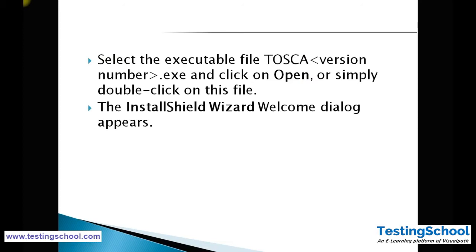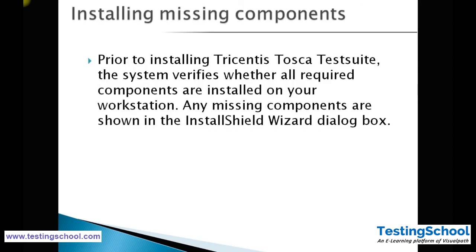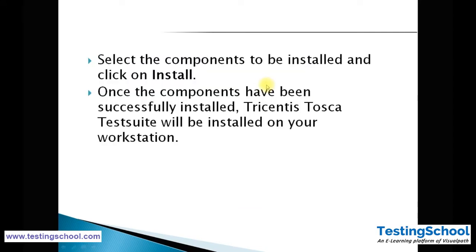Once you download the exe file, select and double-click the executable file — the file format would be Tosca followed by the version number — and you will be navigated to the installation wizard. It will scan your system for prerequisite software and download any that are missing from the internet. Prior to installing Tricentis Tosca Suite, the system verifies whether all required components are installed. Any missing components are shown in the wizard; select them and click Install.